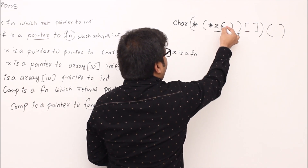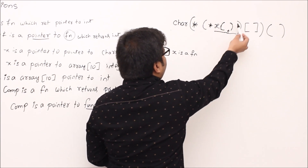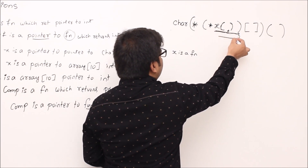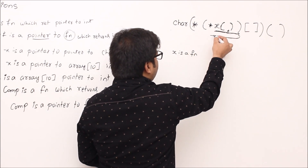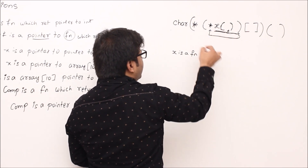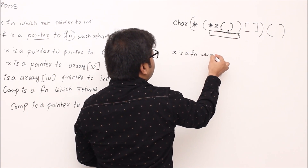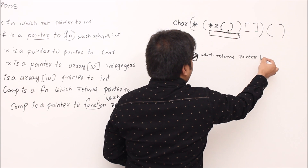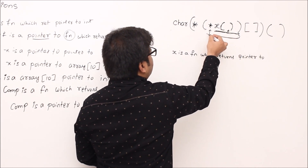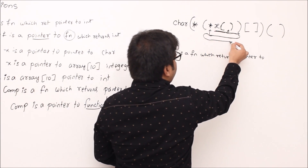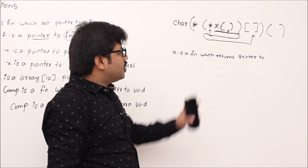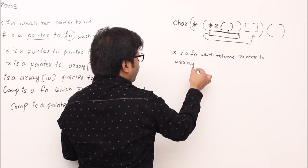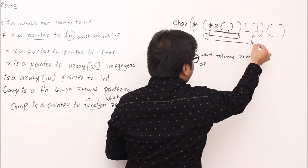'x is a function which returns' — we see a pointer: 'which returns pointer to.' Priority is resolved — go right. I see an array symbol: 'pointer to array.' Array of how many? That is not mentioned — 'array of.' Again priority: take left. Before that I see a star — 'array of pointers.' Pointer is always 'pointer to.'